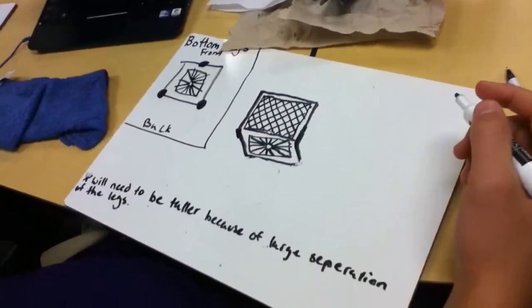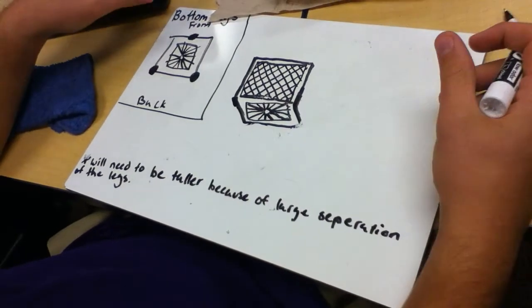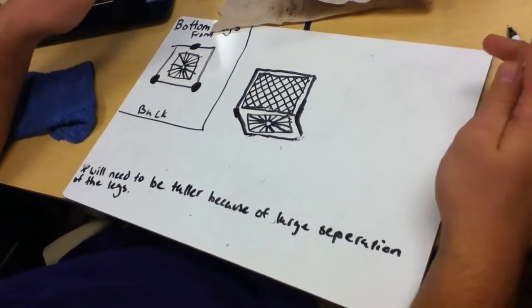What's this note here at the bottom? Just talking about how since it's going to be like three legs, it needs to be a little more separated to be a little more stable.